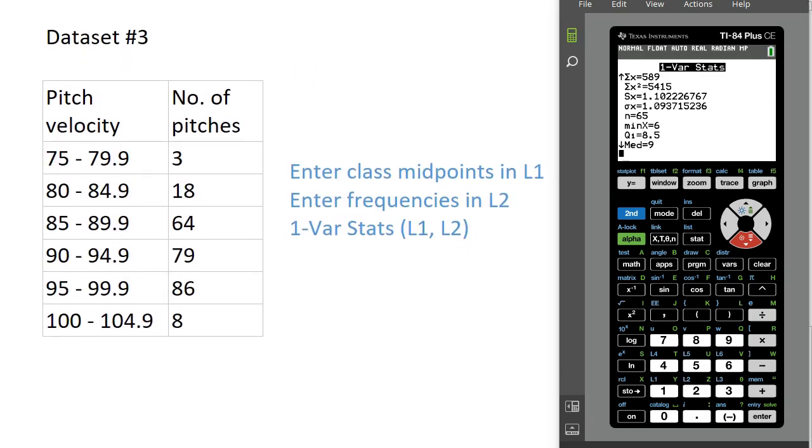Here is our third dataset. The first two examples, our datasets were discrete variables. We had the age of a kid at summer camp, and the first list was just whole numbers. So those were discrete datasets. When we are measuring a continuous variable, we typically collect those values in classes.